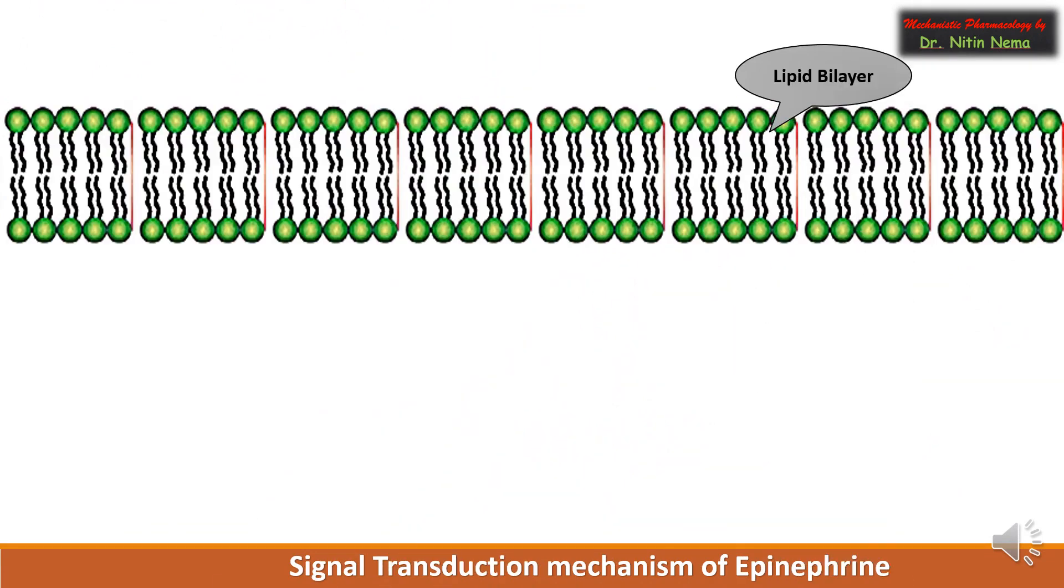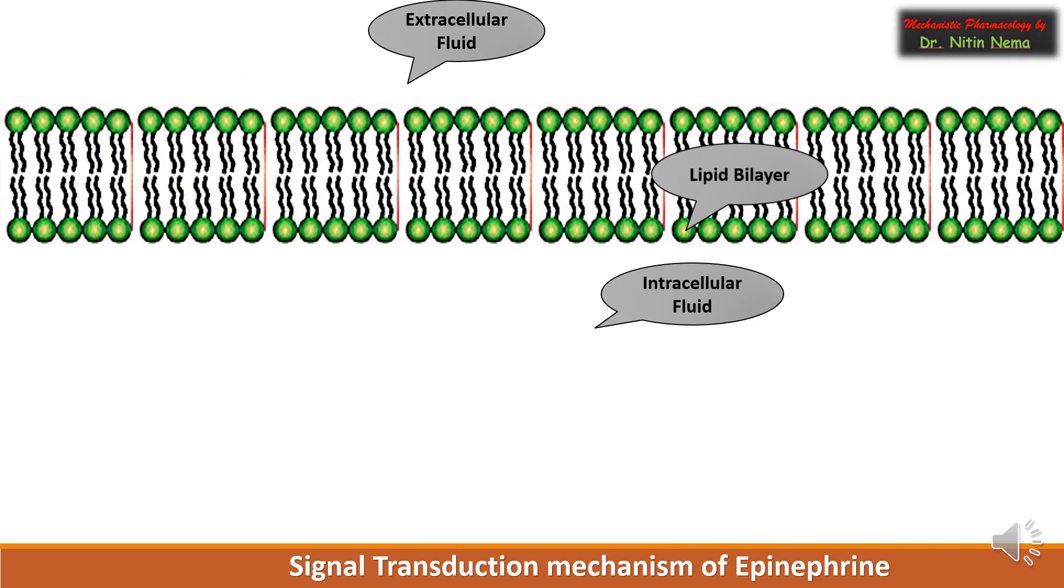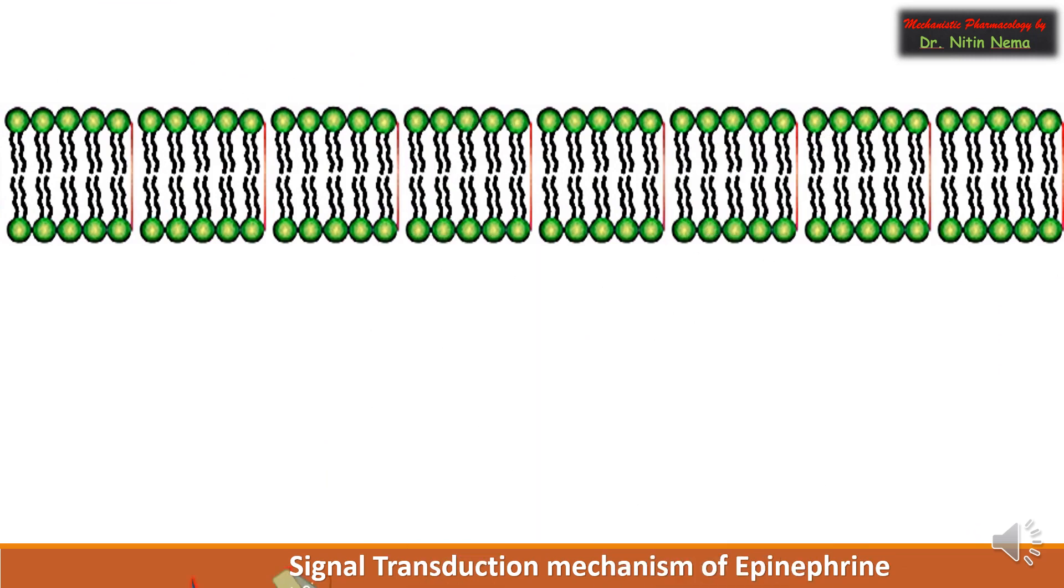Consider this as a lipid bilayer around which there is extracellular as well as intracellular fluid. Suppose this is a G protein coupled receptor, which is originally heptahelical in shape, also called a transmembrane receptor.